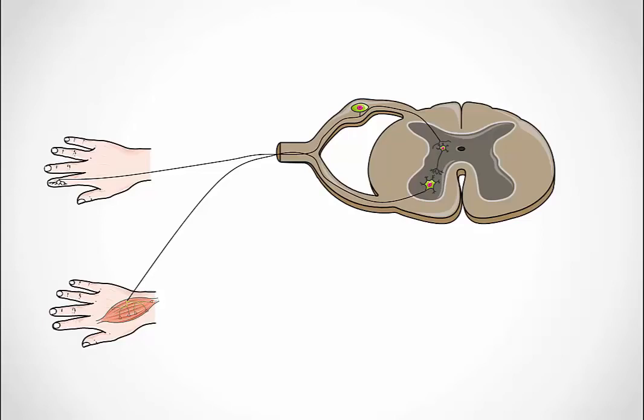Reflexes are rapid, involuntary, but pre-programmed responses that activate muscles or glands. Most reflexes are protective and thus prevent tissue damage. Therefore reflexes must be fast and be processed and activated without the help from the brain. Thus they are involuntary.